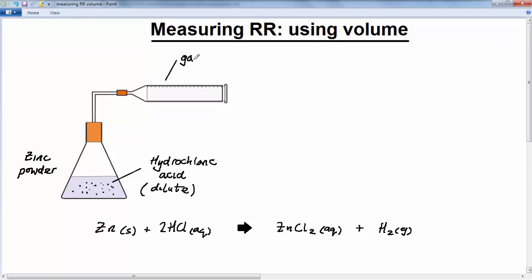Gas syringes are quite expensive, they're made of glass, but they are relatively accurate. So you can measure the volume of the gas in millilitres, and what's going to happen is that the plunger or piston is going to gradually move along the syringe to the right, like this, and what you're going to do is you're going to measure the volume released every given time interval.